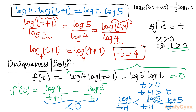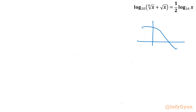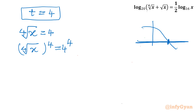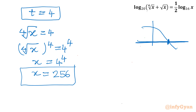Since f'(t) is negative, f(t) is a strictly decreasing function. Drawing the graph, a strictly decreasing function can cross the line y = 0 at most once — confirming there is exactly one solution. Now, t = 4 means ⁴√x = 4, so x = 4⁴ = 256. The single solution is x = 256.